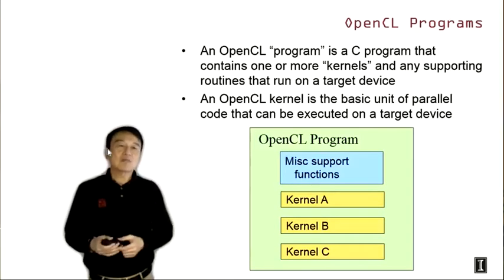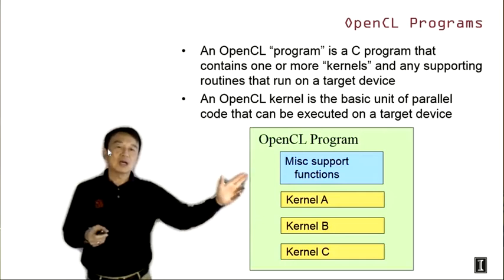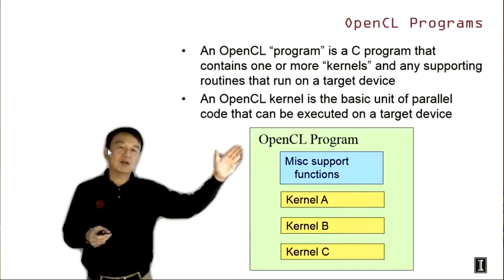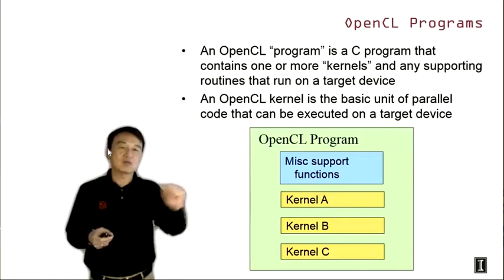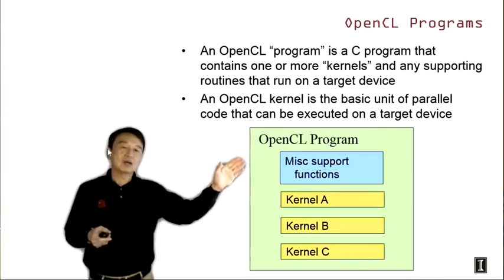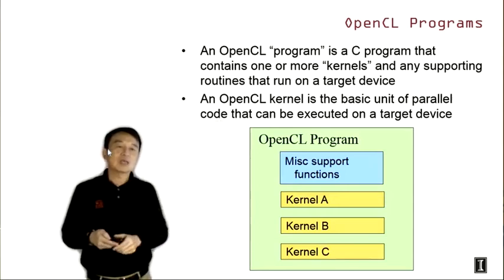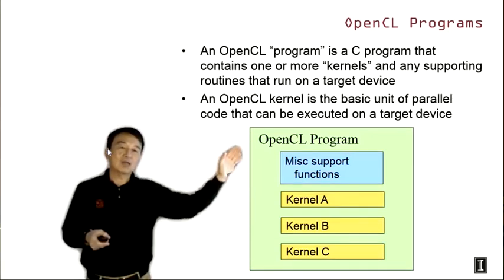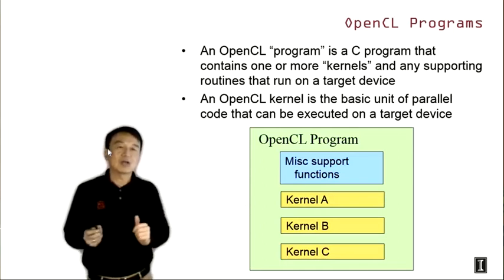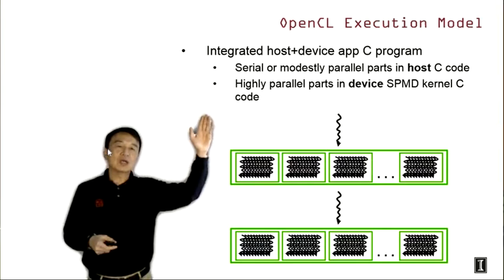An OpenCL program is a C program that contains one or more kernels and any supporting routines that run on a target device. The OpenCL program contains multiple kernels and supporting functions that run on the device, along with host code that executes on the CPU. An OpenCL kernel is the basic unit of parallel code, just like CUDA kernels — these are direct equivalents.